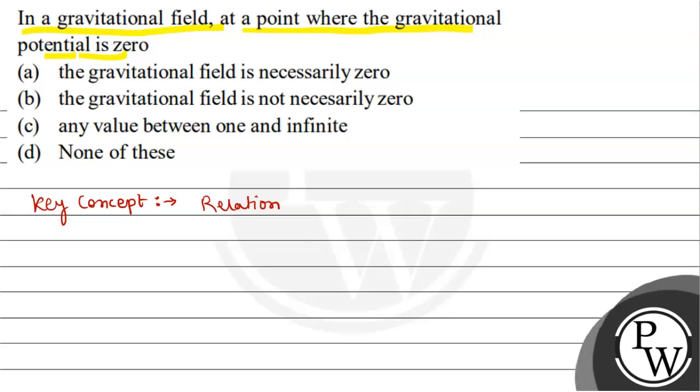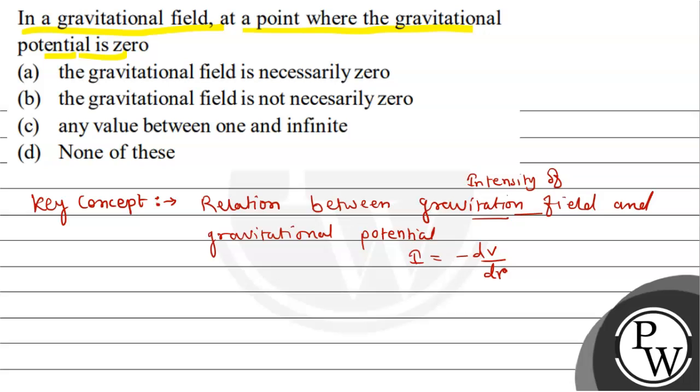Key concept: Relation between gravitational field and gravitational potential. This is expressed as i equals to minus dv by dr. This is the gravitational field, which is the intensity of gravitational field. So we represent i equals to minus dv by dr, where distance will change and minus sign indicates the opposite direction.